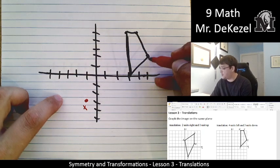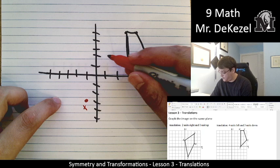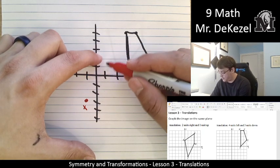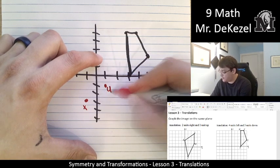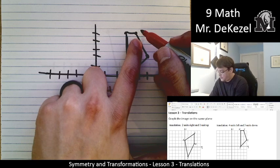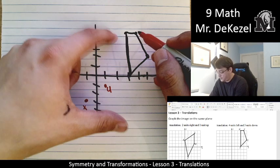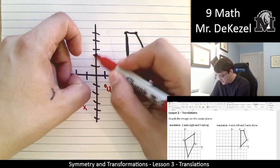Point U is going to go four to the left. One, two, three, four. It's going to go three down. One, two, three. It's right here. This is point U. V is going to go four units to the left. One, two, three, four, and three down. One, two, three. That's right here.